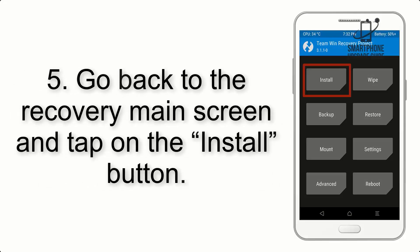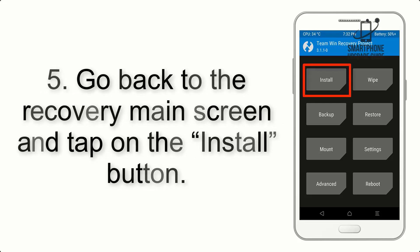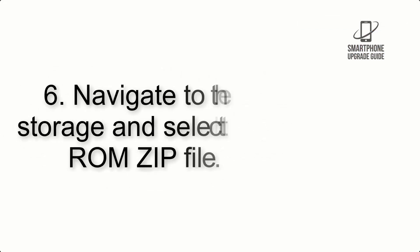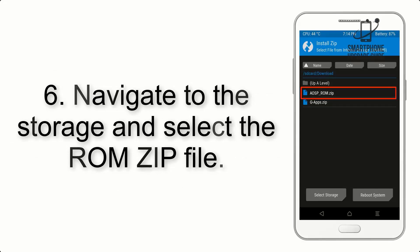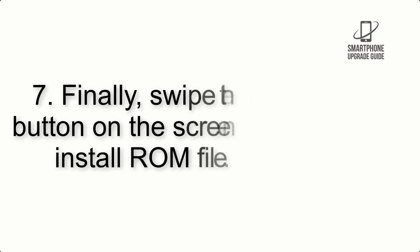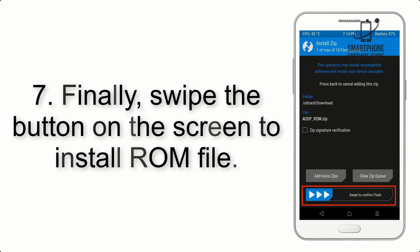Step 5: Go back to the recovery main screen and tap on the Install button. Step 6: Navigate to the storage and select the ROM zip file. Step 7: Finally, swipe the button on the screen to install the ROM file.